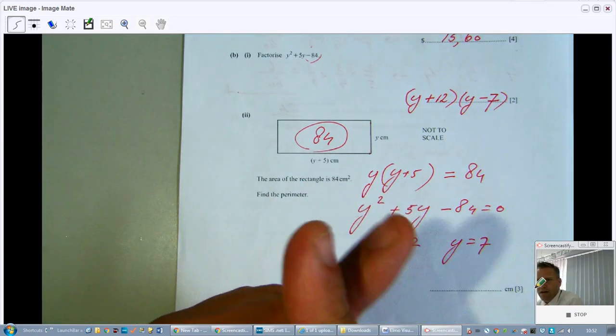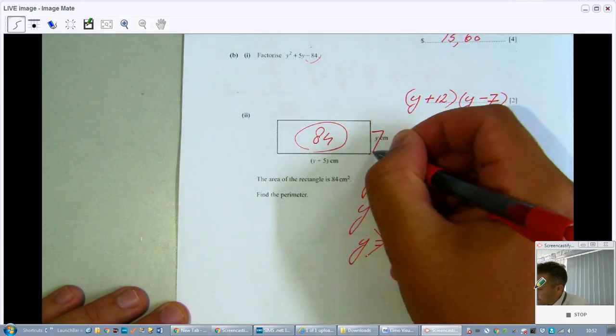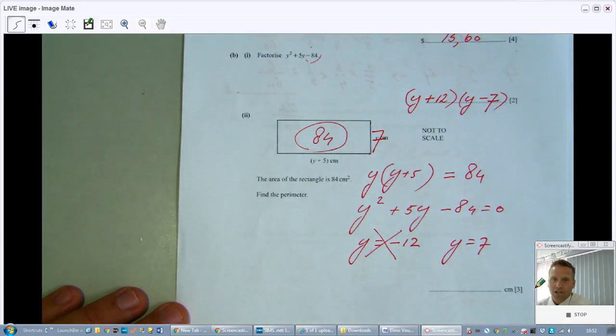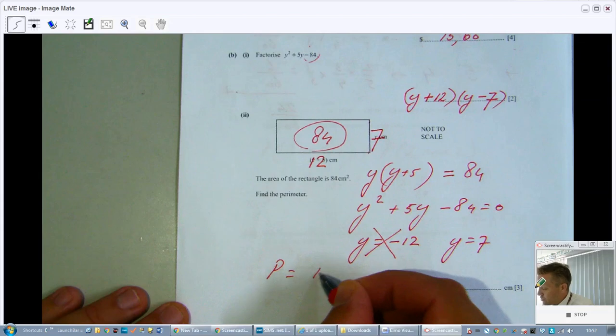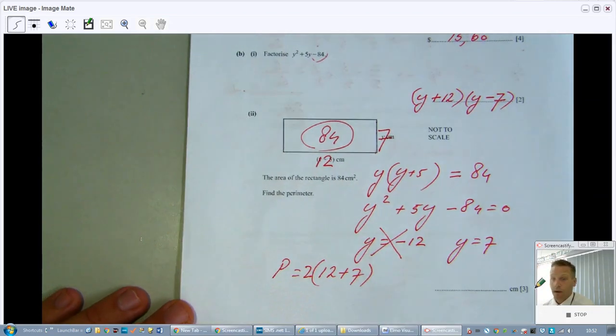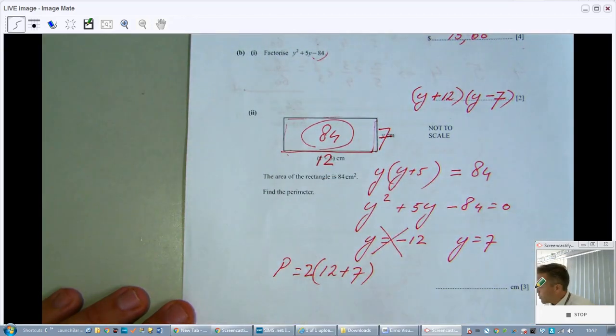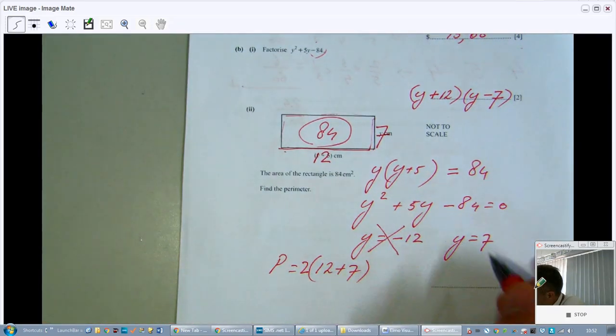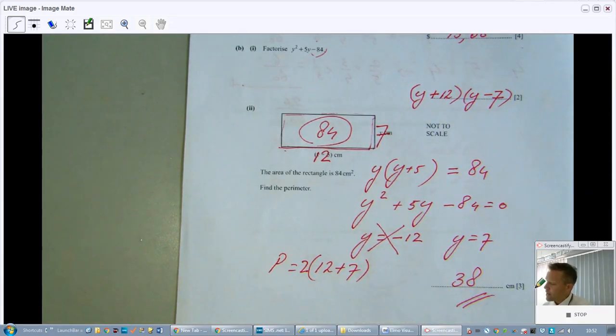So I have to use the positive value, 7. And if that is 7, if Y is 7, then Y plus 5 is going to be 12. So the perimeter is going to be 12 plus 7 times it by 2, where the perimeter is the sum of the lengths on the outside. So what is that? 38? I believe so. 38. What a beautiful question.